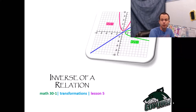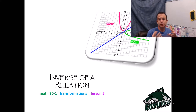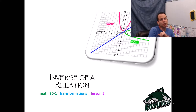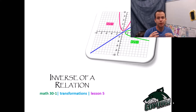Hey friends, today is our last lesson of transformations, lesson 5, and we're going to talk about inverse of a relation. We've actually dealt with this a little bit already because we've talked about diagonal reflections. When I take the inverse of something, I am actually diagonally reflecting it on the line y equals x. But today we want to take a deeper look into the equation aspect of it, not just the picture aspect of it.